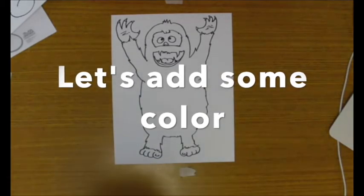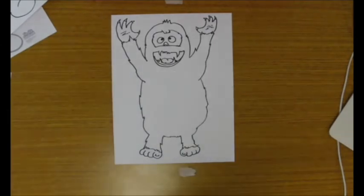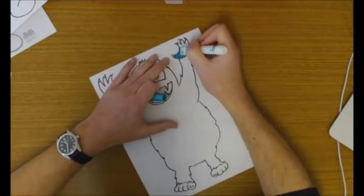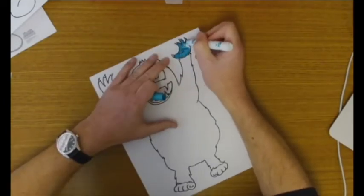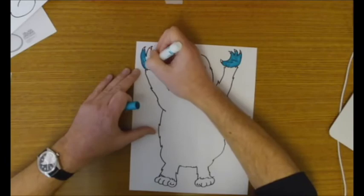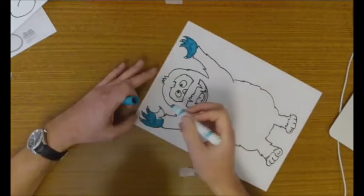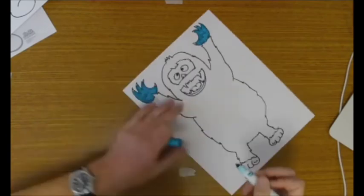And then we can add color. We don't have to do too much color here. It's mostly just the claws and the feet and the face. And remember, cool colors. He's cold. He's in the snow. So I'm using blue for the hands and the face.